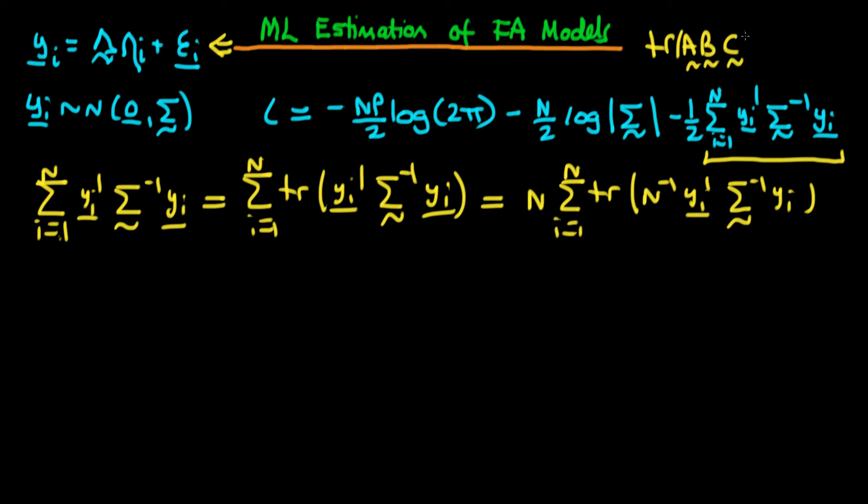It's a property of the trace operator that the trace of matrices a, b, and c is the same thing as the trace of c, a, b. In other words, it's invariant under cyclic permutation of its arguments.